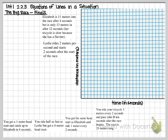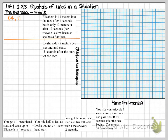We can start dealing with both Elizabeth and Leslie. Let's take a look at Elizabeth. She is 11 meters into the race after four seconds — so at the four second mark she is 11 meters in. I'll go ahead and plot that point. Now it says she's only 13 meters in after 12 seconds, so we have another point: 12 seconds and 13 meters in. Let's go ahead and plot that one.